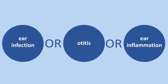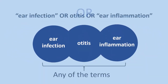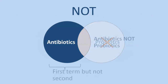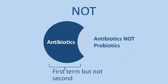Boolean OR is used between terms in the same concept — for example, 'ear infection OR otitis OR ear inflammation.' OR tells the database to retrieve records that have any of the terms, expanding your search and increasing the number of results. Boolean NOT is used to exclude terms — for example, 'antibiotics NOT probiotics' will retrieve records that include antibiotics but omit any record that also includes probiotics. Although NOT can be helpful to narrow a search, it is used sparingly because it can leave out results that may be relevant to your topic.